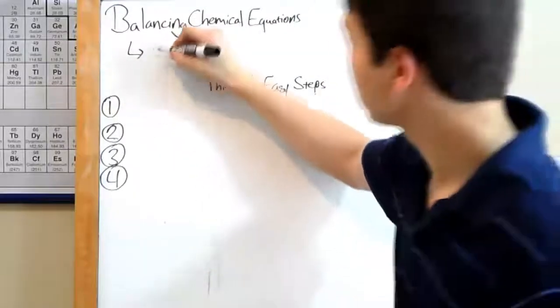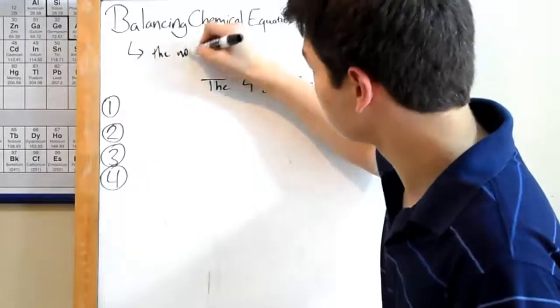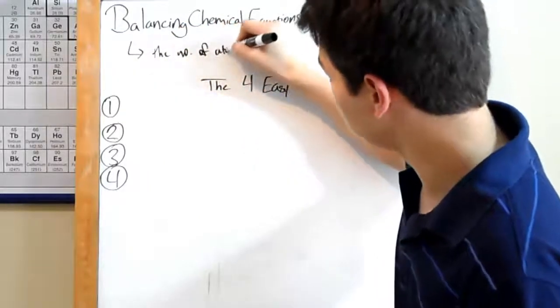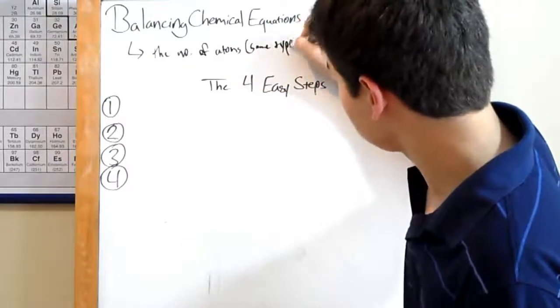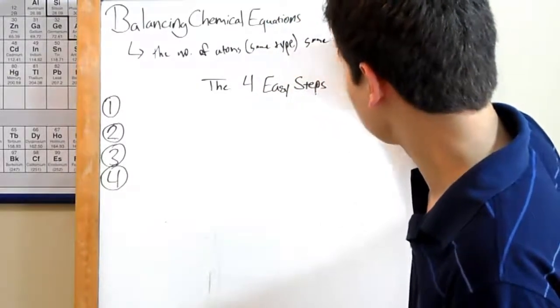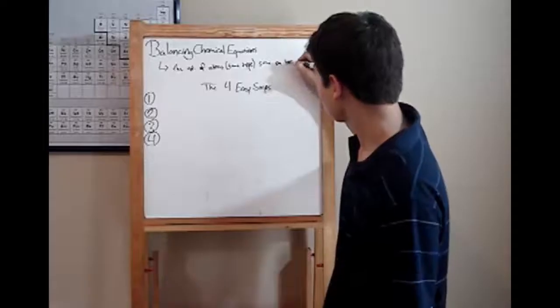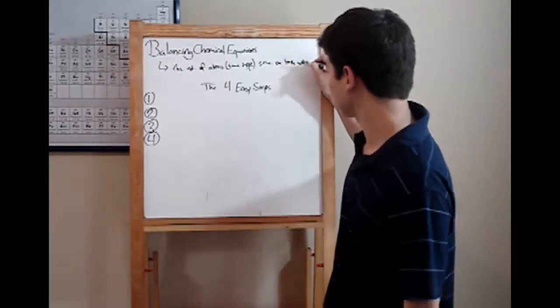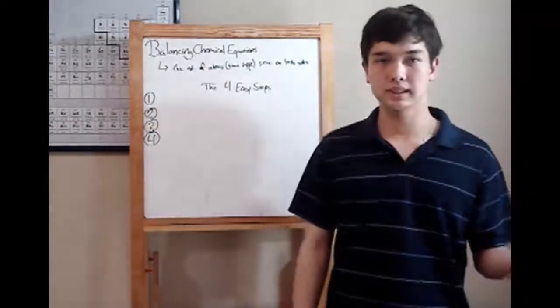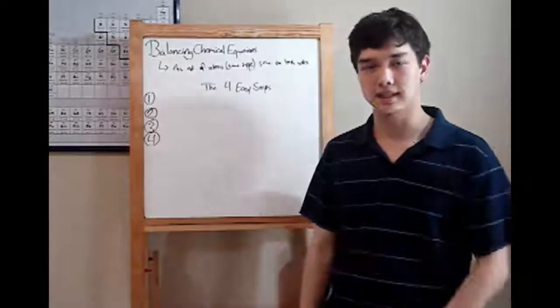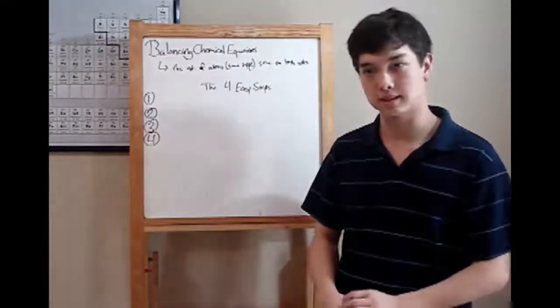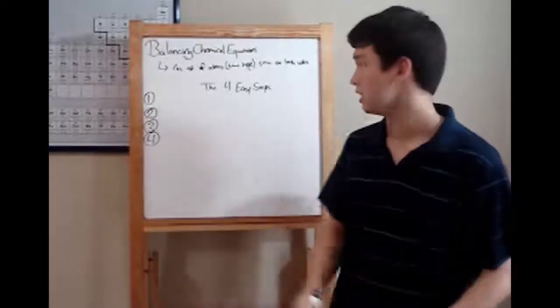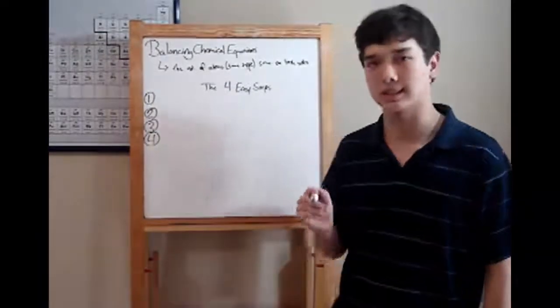The first rule you need to remember is that the number of atoms of a specific type has to be the same on both sides of the equation. For instance, if you add six carbons on one side of the equation, six carbons on the other side. Fifteen billion oxygens on one side, fifteen billion oxygens on the other. Let's move on, and I will teach you the four easy steps of balancing chemical equations.